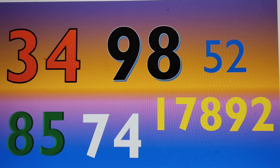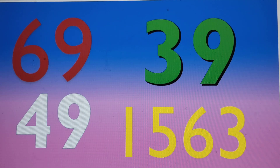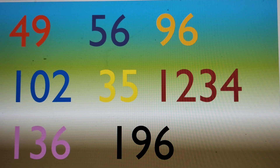The number in yellow? 17892. The number in white? 74. The number in yellow? 1563. Correct. What is the number in orange? 96.